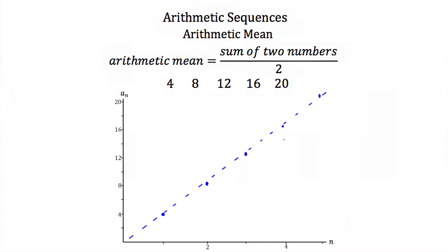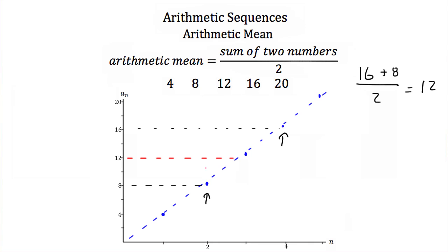And if I wanted to find the halfway point between our fourth term and our second term, I could take the value of my fourth term, which is 16, add it to the value of my second term, which is 8, and divide that sum by 2. Now 16 plus 8 is 24, and 24 over 2 is 12. So halfway between 16 and 8 would be 12. Notice that when we find 12 is halfway between 16 and 8, if we take that back down to the x-axis, we would find that we'd be at our third term. So that means that using the arithmetic mean, we can find missing terms in our sequence.